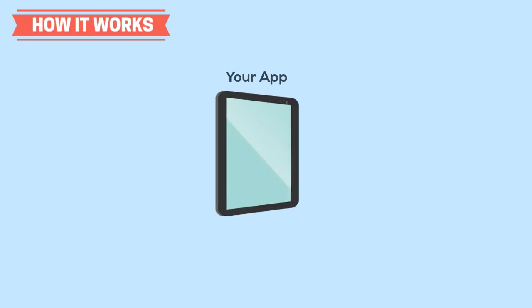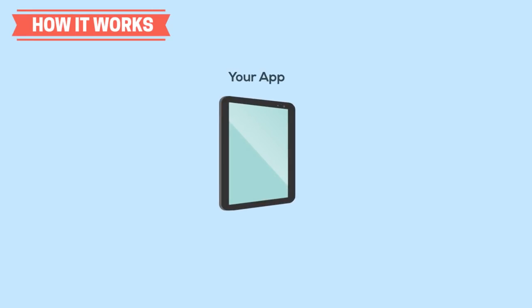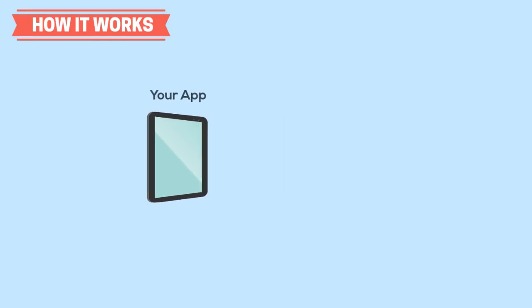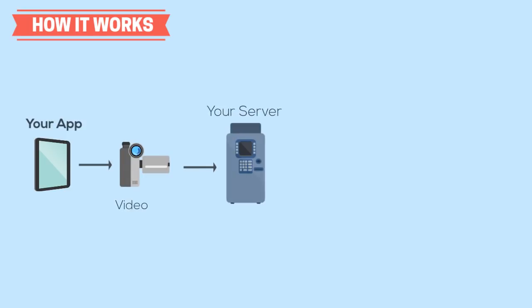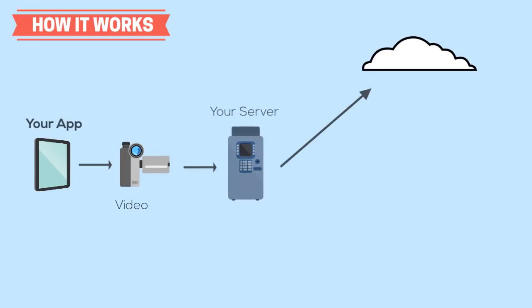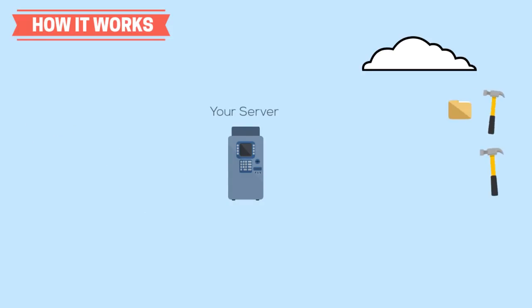How does it work? Imagine that you have a new mobile application that allows users to upload and share videos. As soon as one of your users uploads a new video file, the cloud platform receives a request from your servers. The cloud platform then finds your file by name and location and begins to decode it. Once the file is decoded, it then creates a variety of encoded video files based on the instructions from your server.